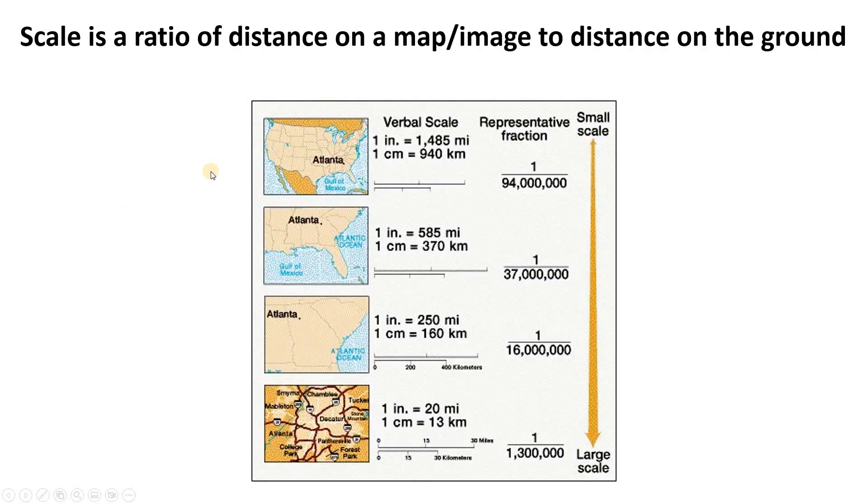Okay so first we have to have a firm understanding of what is scale for a map or an image. It's the ratio of the distance on that map or image to the equivalent distance on the ground. A big map like this might have a scale where one inch equals 1485 miles. A zoomed in map like this might have one inch equals 20 miles. If you take those as a unit list ratio you get 1 to 94 million or 1 to 1.3 million. So scale is this idea of how ground distance is represented on a map or image.